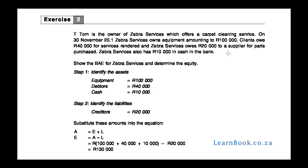Step one is to identify the assets. Looking at the example, you will see that there is equipment at $100,000, debtors at $40,000, and cash at $10,000. Zebra Services also owes $20,000 to its creditors. Substituting the asset amounts gives a total of $150,000. Minus the liabilities of $20,000, the equity balance is $130,000.